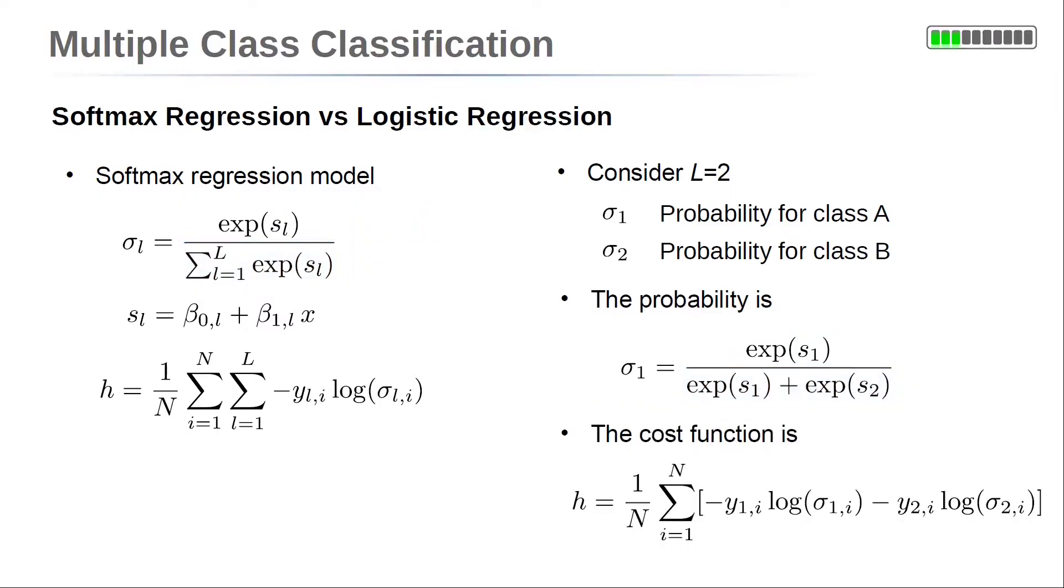The summation in the cost function over the two classes can be written explicitly. This leads to the two terms presented on the right side at the bottom in the cost function. The first is for l = 1, and the second one is for l = 2.